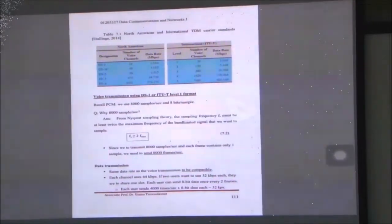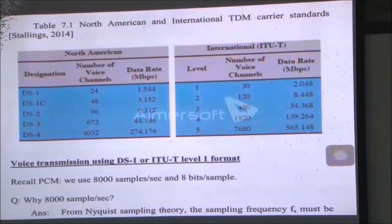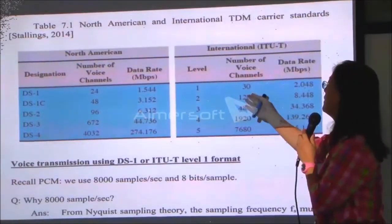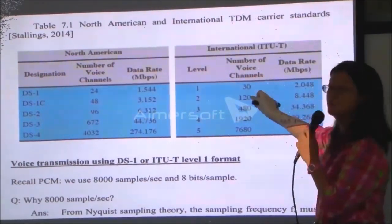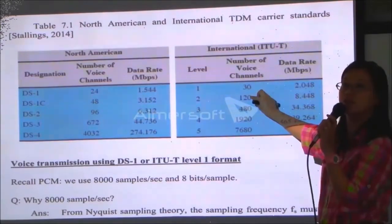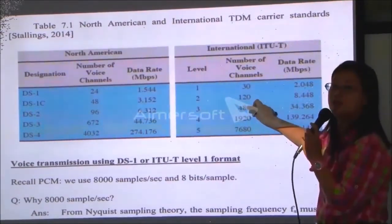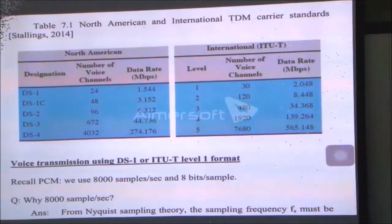They will have different data rates. Level one has 30 channels, level two combines four of those into level two, and level three combines four of level two — it steps up. What I want to teach you next is this.